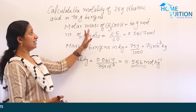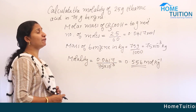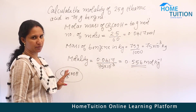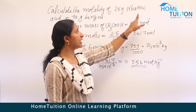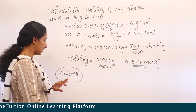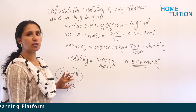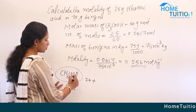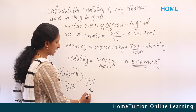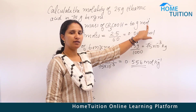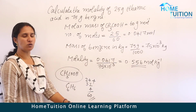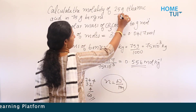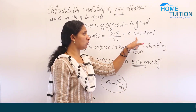Next question: calculate the molality of 2.5 grams of ethanoic acid (CH3COOH, acetic acid) in 75 grams of benzene (C6H6). Molecular mass of acetic acid: 2 carbons = 24, 2 oxygens = 32, 4 hydrogens = 4, total = 60 g/mol. Number of moles = 2.5 divided by 60 = 0.0417 moles.